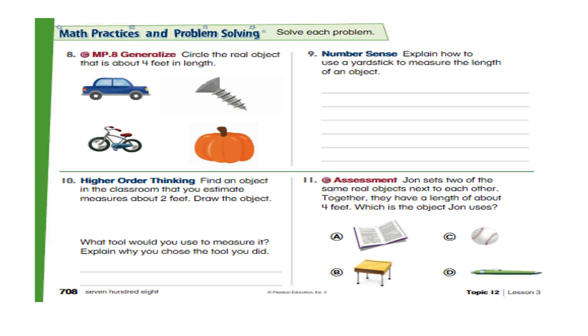Now, question eleven. John sets two of same real objects next to each other. Means, among these objects, he picked one object. And he placed two of them together. And the length of that object is four feet. Four feet. So, which one among these objects? A, B, C and D. Which one do you think is about four feet? Yes. Very good. This desk or the table is about four feet. Here are some sample answers.